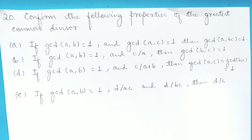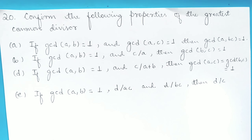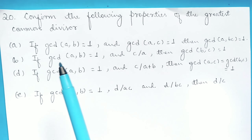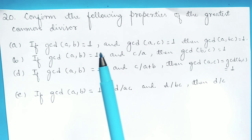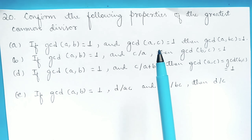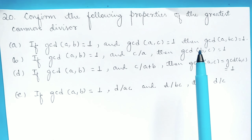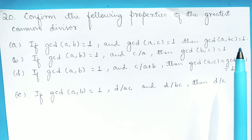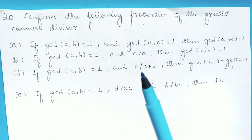In today's video, I'm going to continue solving question number 20, problem 2.3 from Elementary Number Theory. We need to confirm the following properties of the greatest common divisor. The first one: if GCD of A and B is 1 and GCD of A and C is 1, then we have to prove that GCD of A and BC is 1.